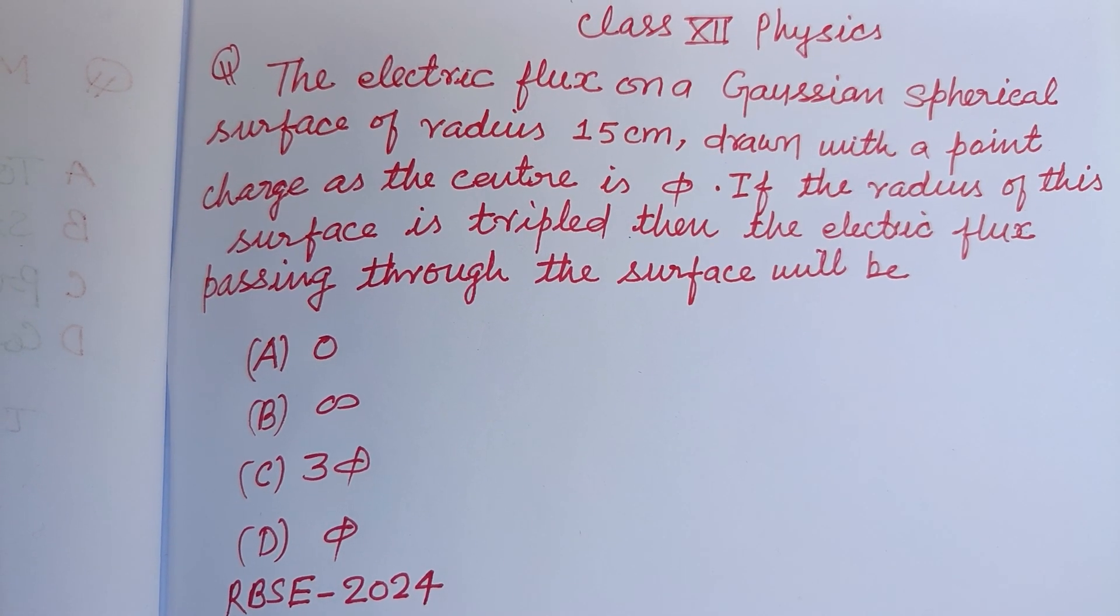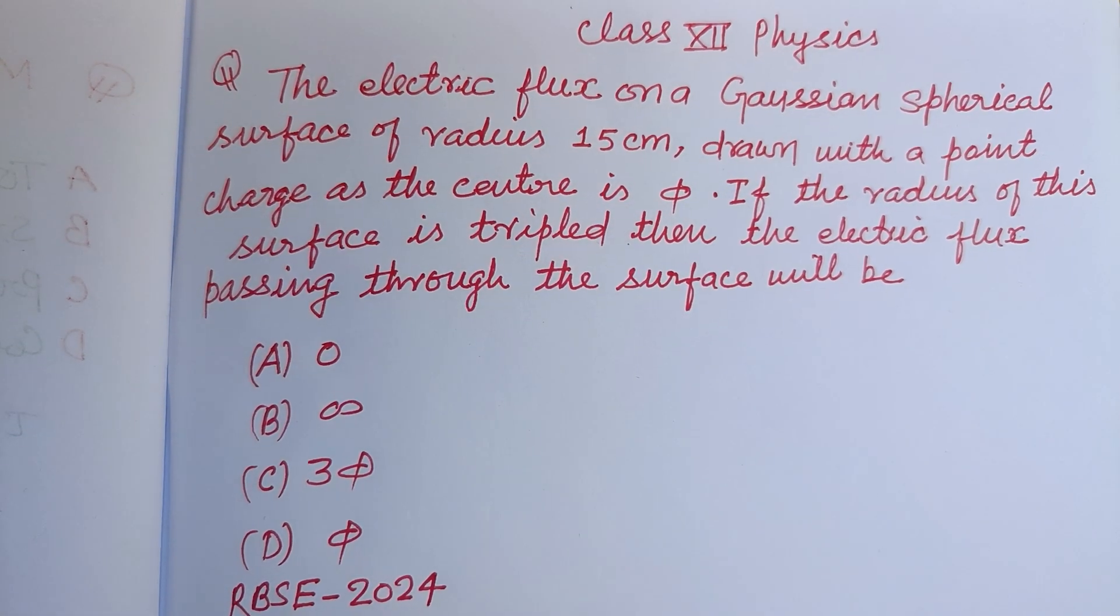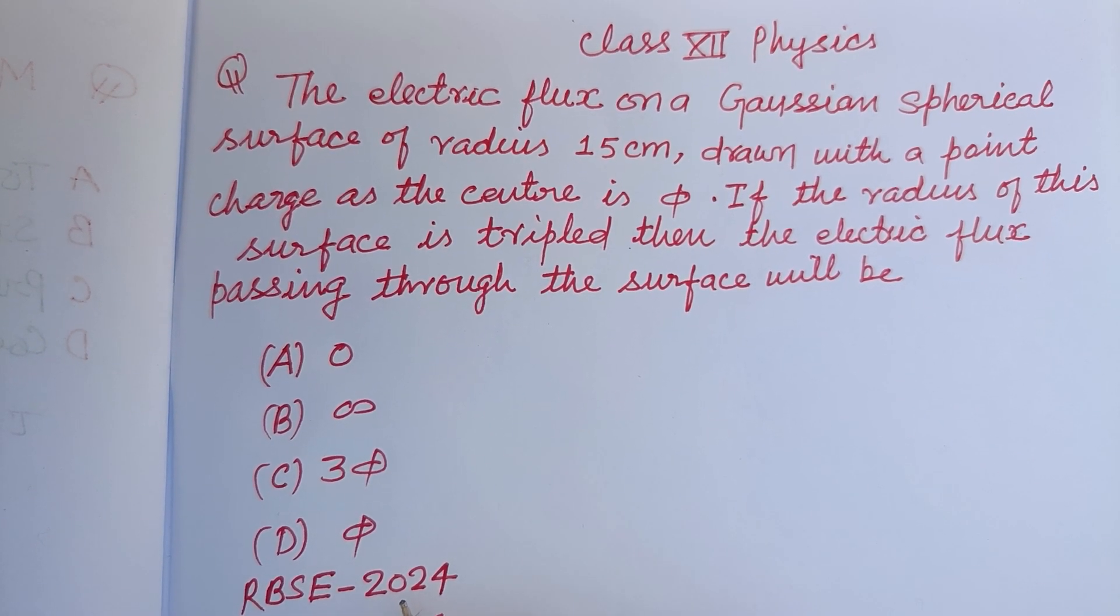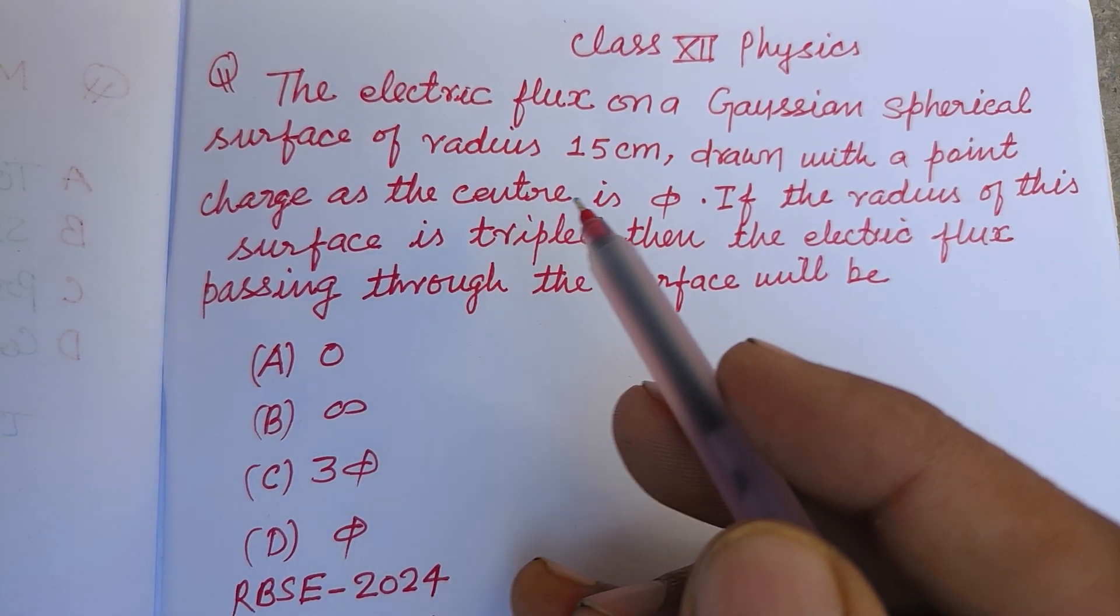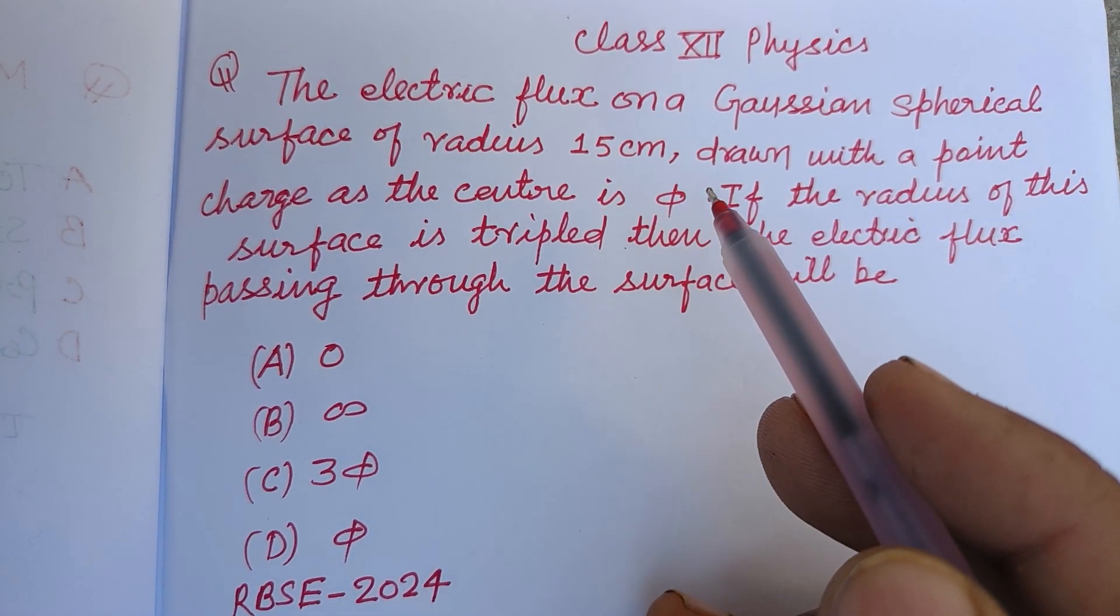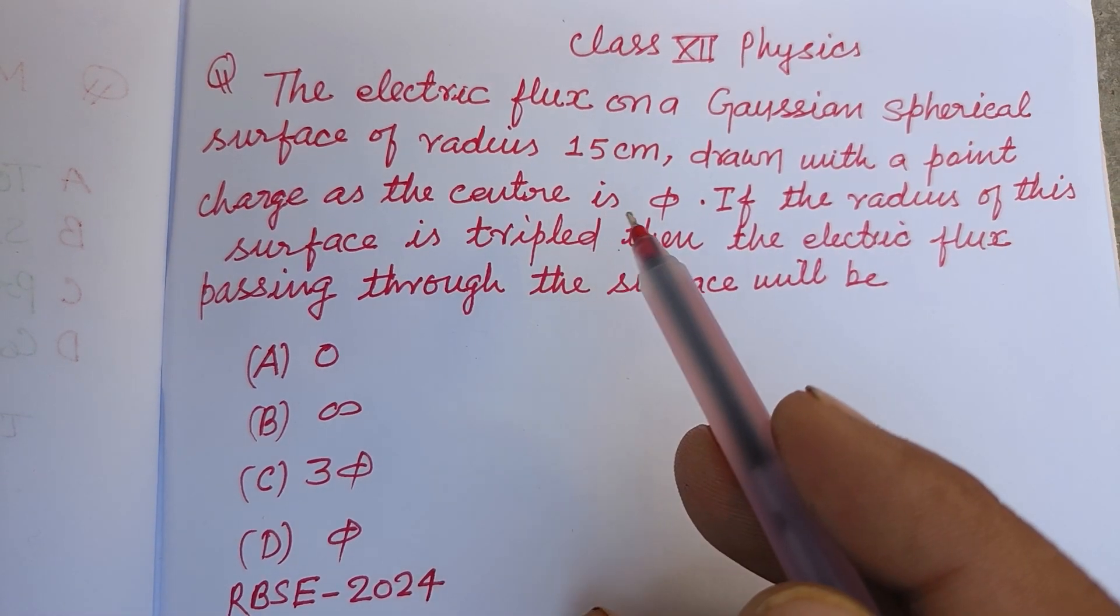Hello viewers, welcome to this YouTube channel. This is a question from Rajasthan Board of Senior Secondary Education 2024 exam. The electric flux on a Gaussian spherical surface of radius 15 centimeter drawn with a point charge at the center is phi.